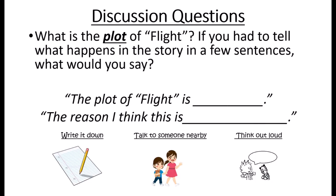So, let's discuss the story. What is the plot of Flight? If you had to tell what happens in the story in a few sentences, what would you say? The plot of Flight is about how Charles Lindbergh flew from New York all the way to Paris. It was really difficult — he went through a lot — but he made it, and he was very famous, and it changed air travel forever.